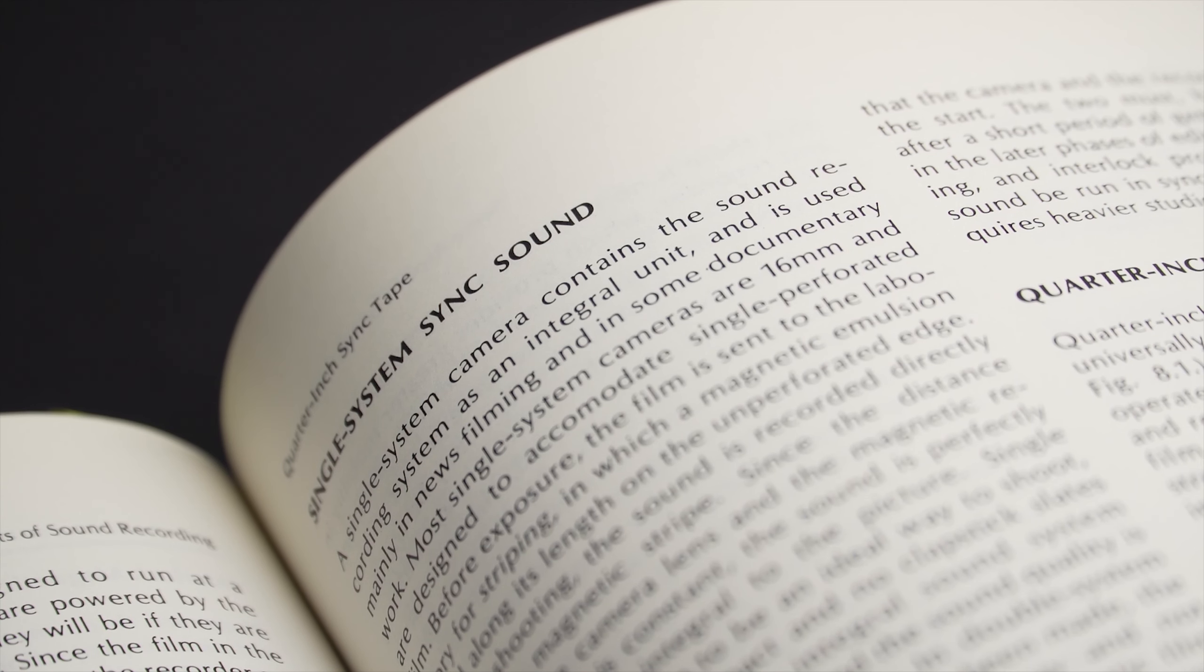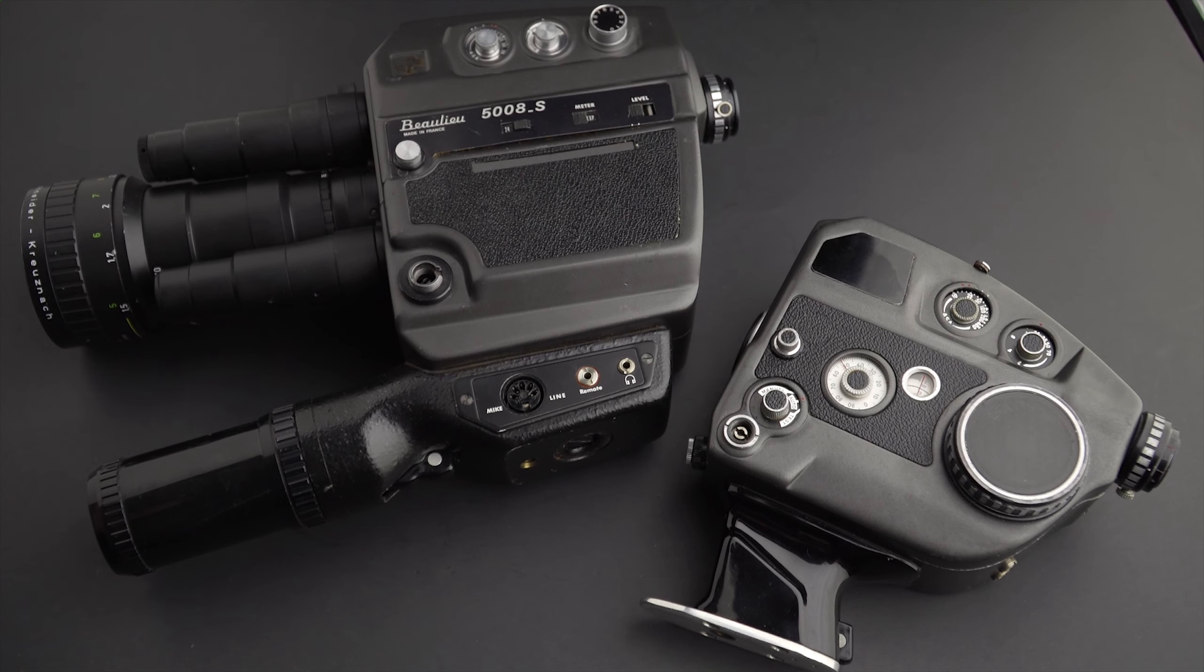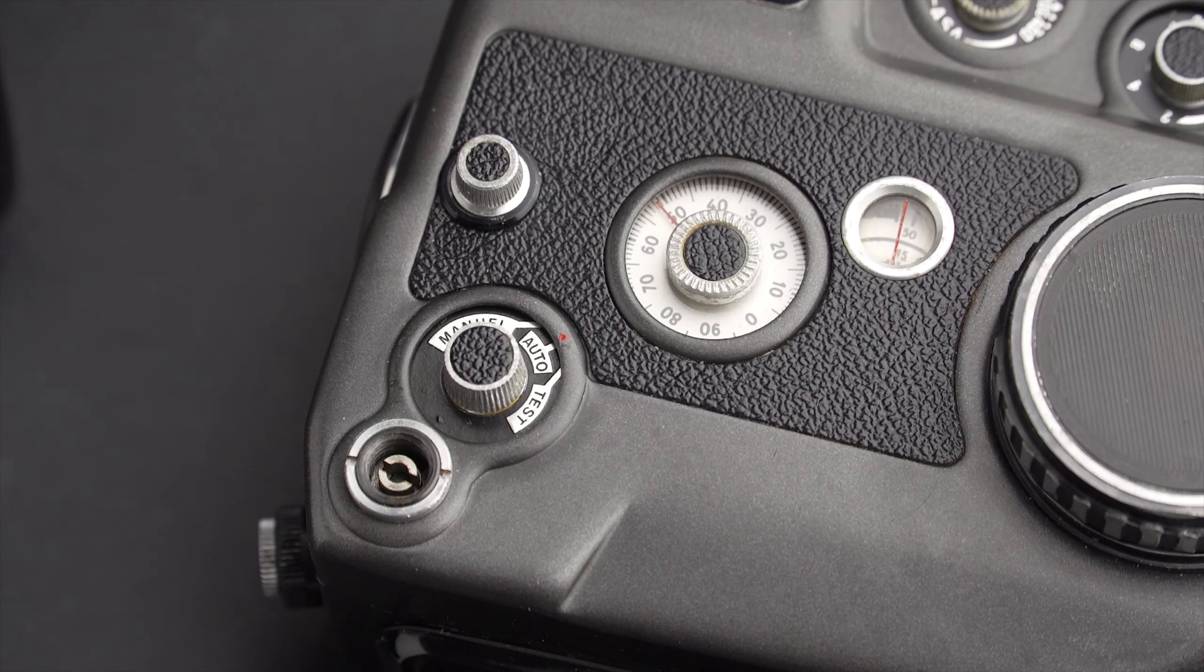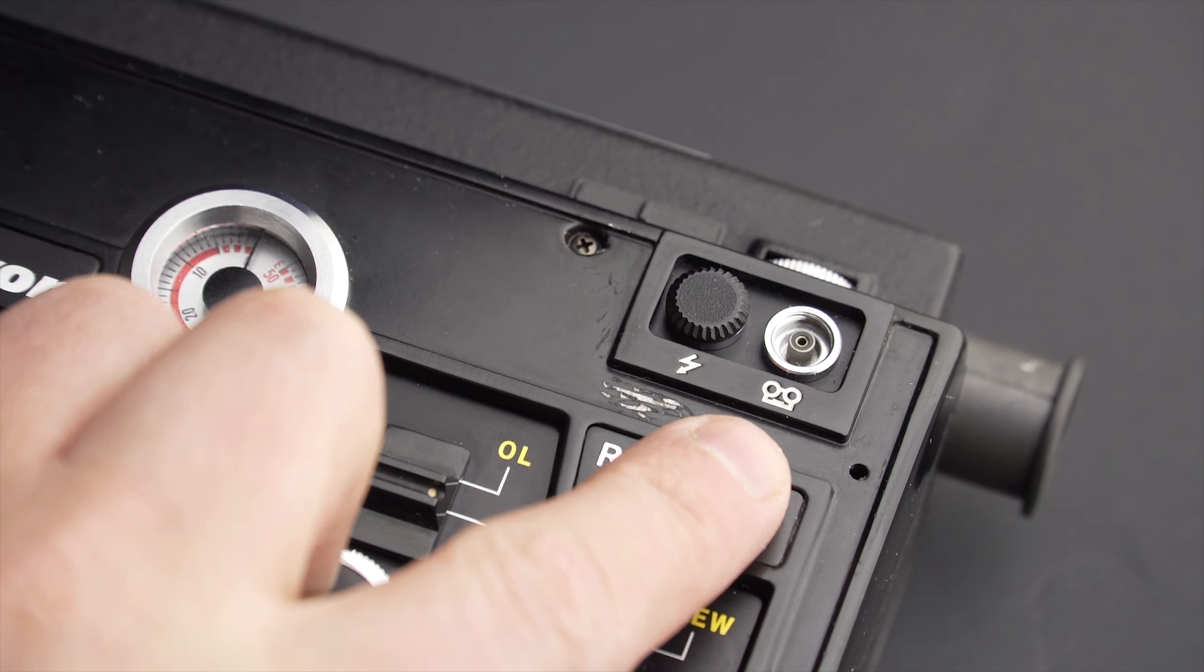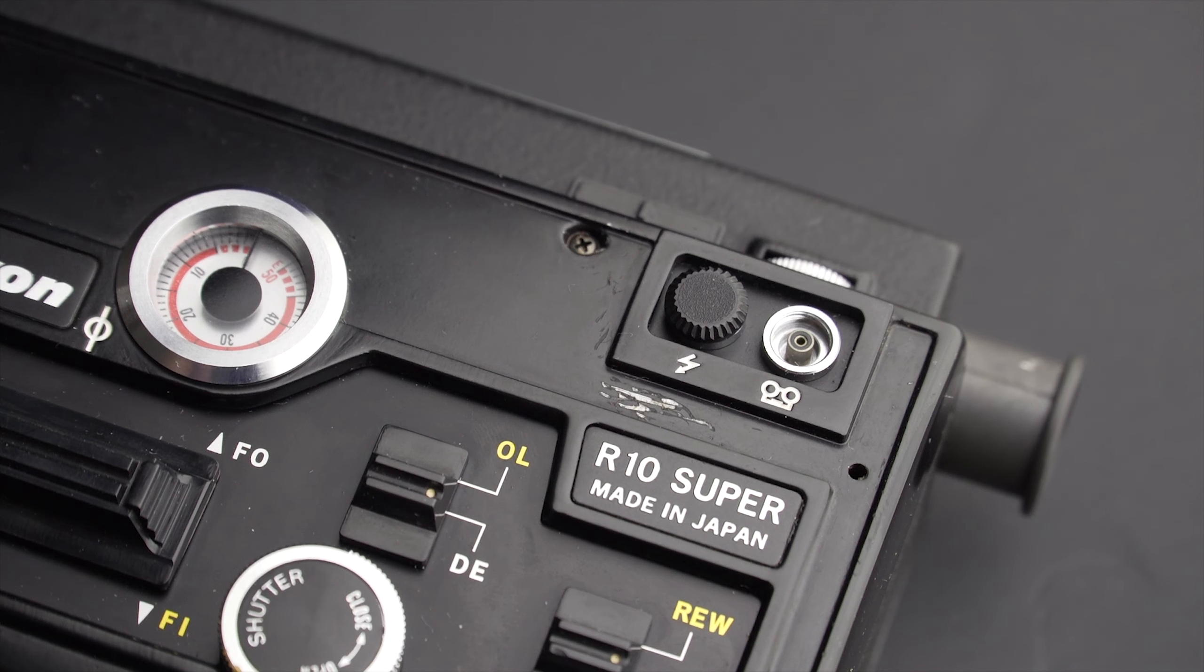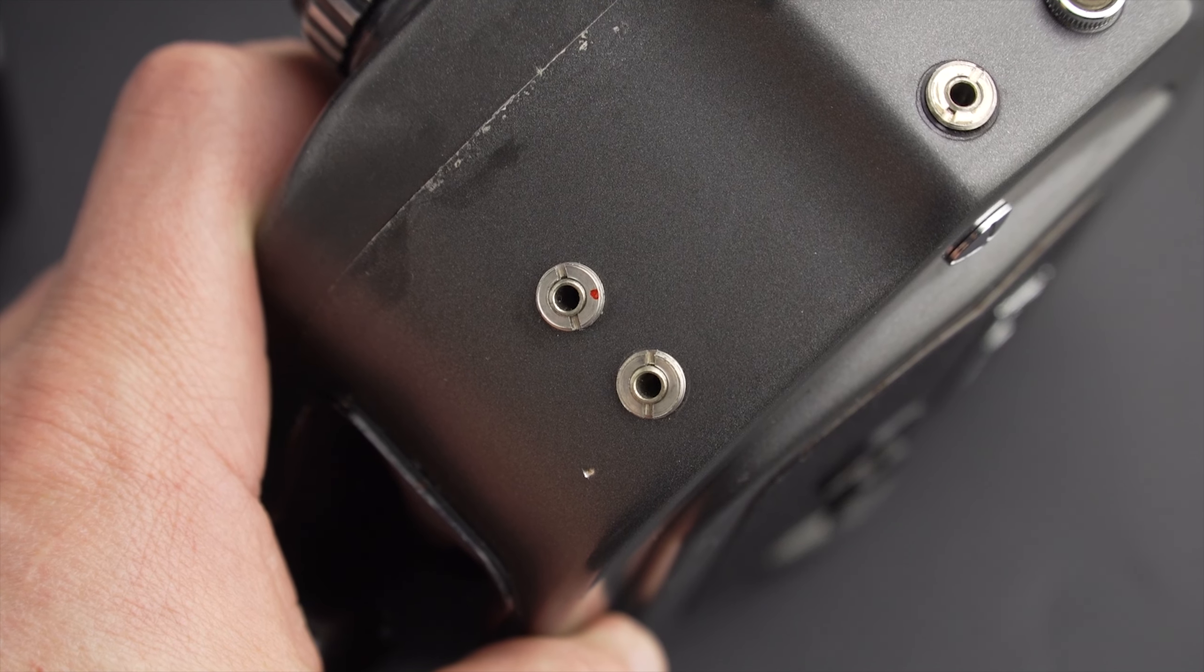This method is known as single system. Brands like Beaulieu use the term sync pulse generation in their synchro pilot system - the concept was the same. There are several Super 8 and 16 millimeter cameras that are able to start and stop a sound recorder, but they don't send any information to it.